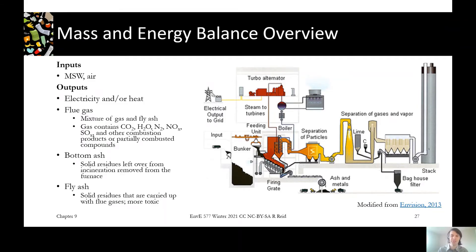And then we've got our fly ash, which is moving away from the waste in our flue gas, but we're capturing it through our air pollution control system. Because it's in with the flue gas, the fly ash tends to absorb a lot of the toxic things in the flue gas, which makes it a more hazardous material to handle than the bottom ash.